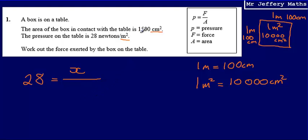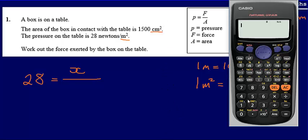And I want my area in metre squared. So in order to turn this 1,500 centimetres squared into metre squared, I'm going to have to divide it by 10,000. So 1,500 divided by 10,000 is going to give me 0.15.